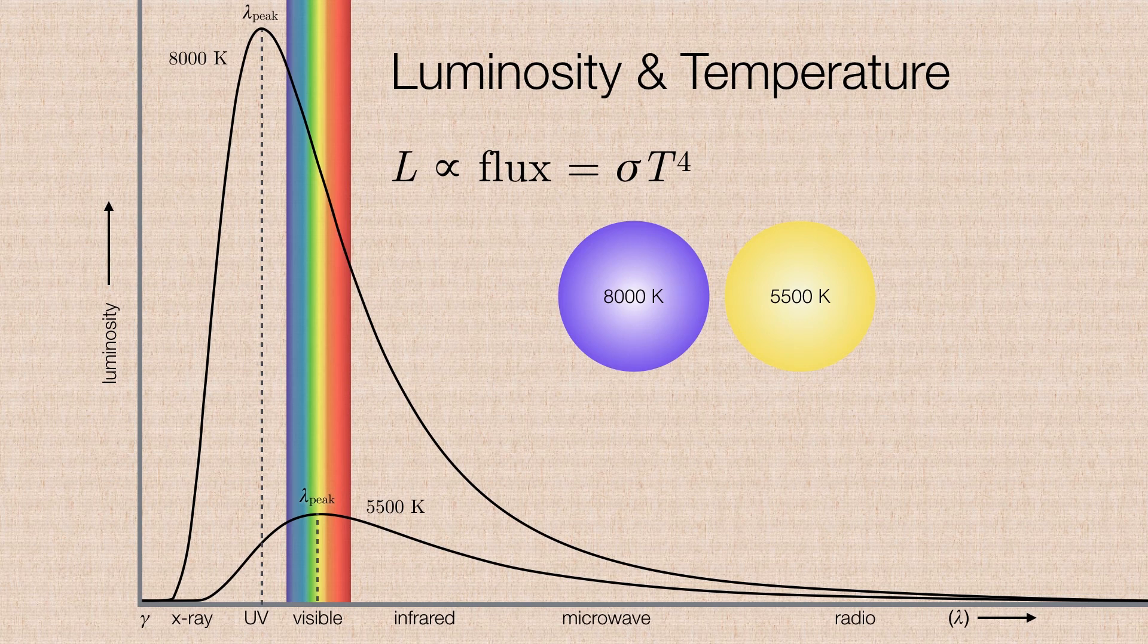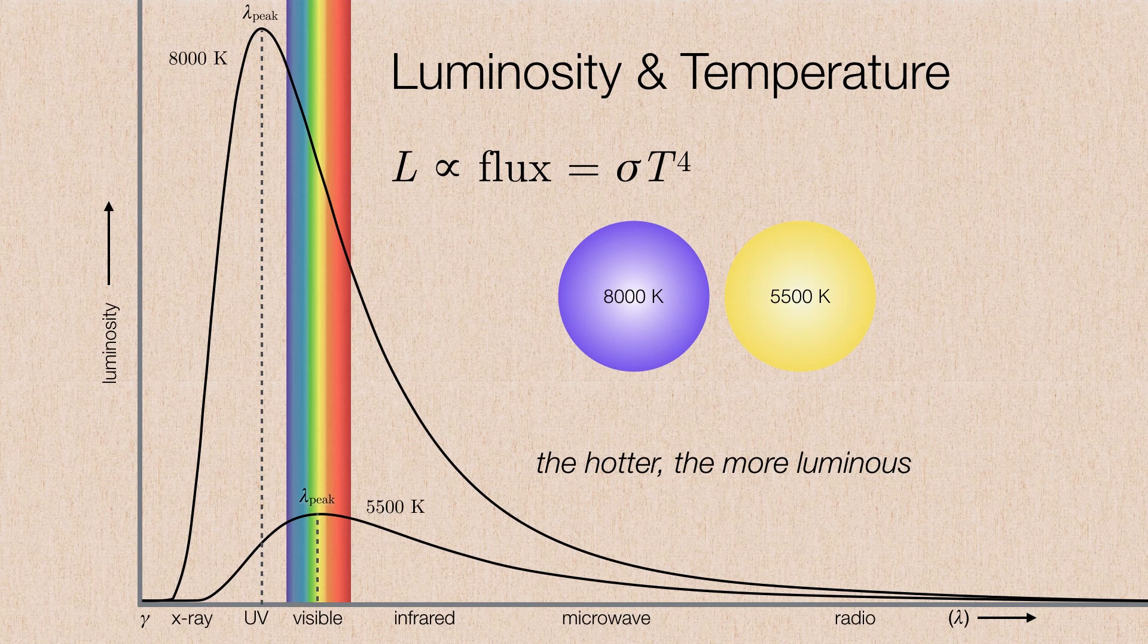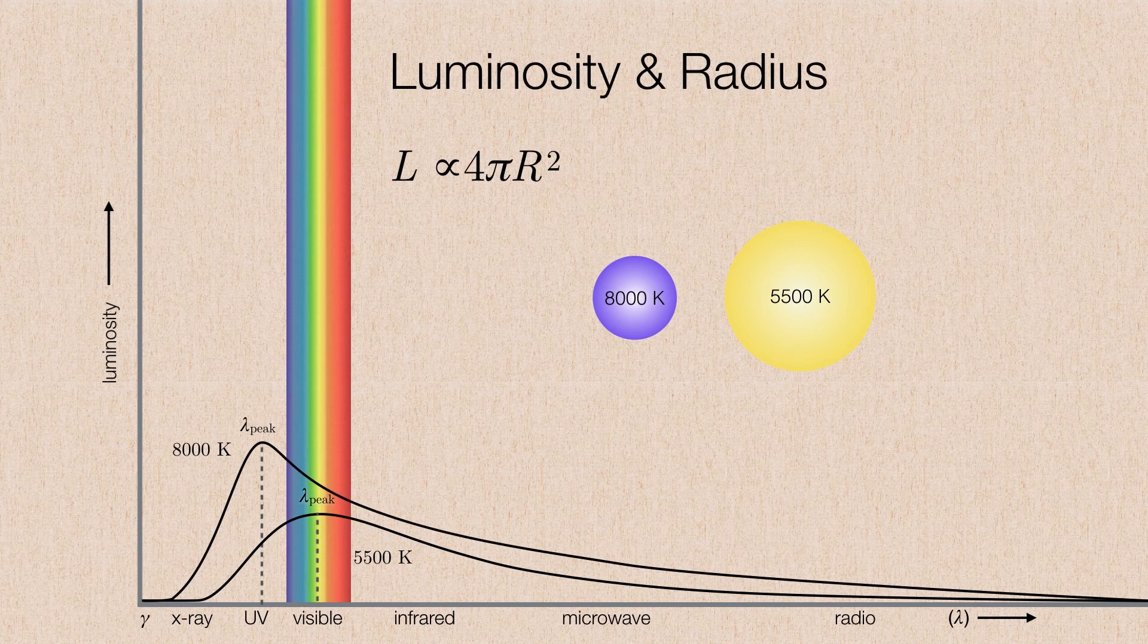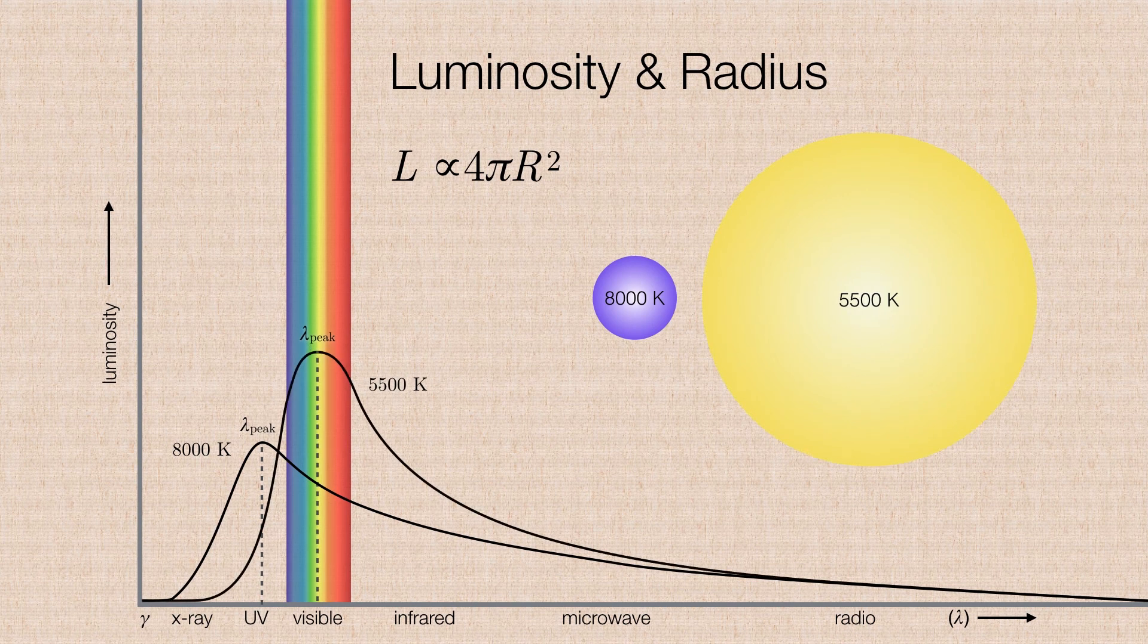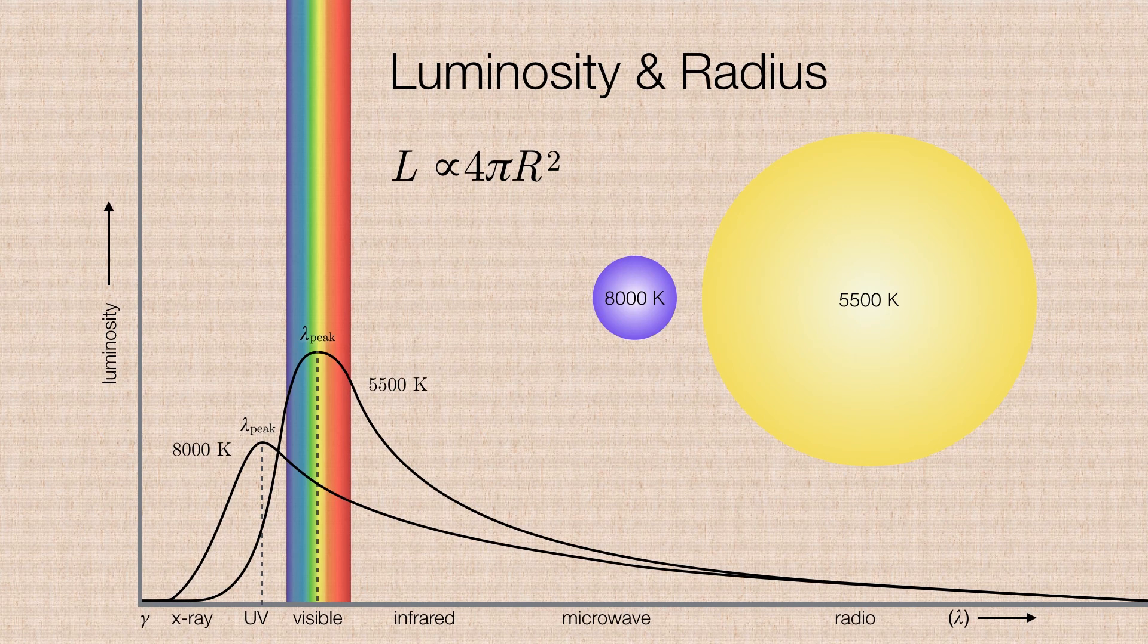Let's take a closer look at the relationship between luminosity and temperature. Since luminosity is proportional to the flux or proportional to the temperature to the fourth power, an 8,000 Kelvin star is going to be much more luminous at every wavelength than a 5,500 Kelvin star. So the hotter, the more luminous. However, if we shrunk the radius of the 8,000 Kelvin star, now its luminosity decreases because the luminosity is also proportional to its radius squared. As a matter of fact, if we increase the radius of the cooler star, we can increase the luminosity of the cooler star and even let it outshine the hotter star at many wavelengths.